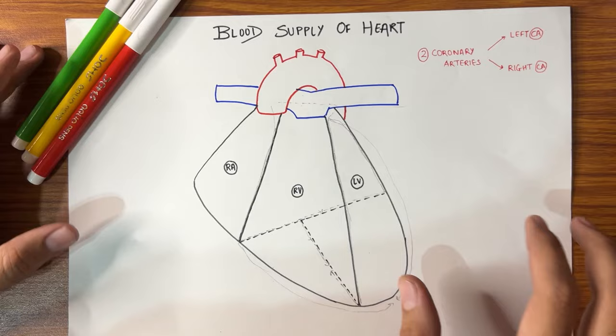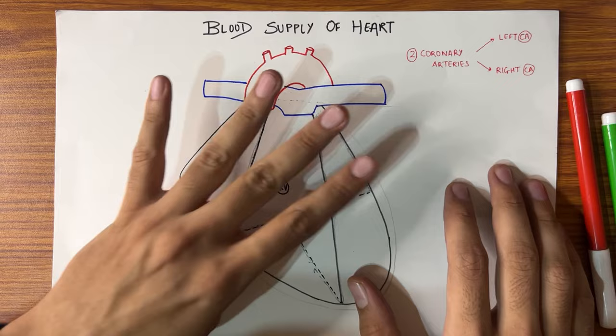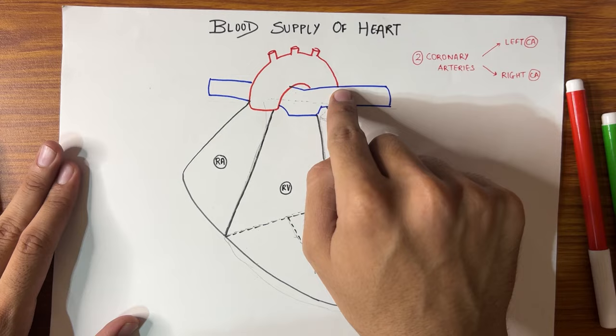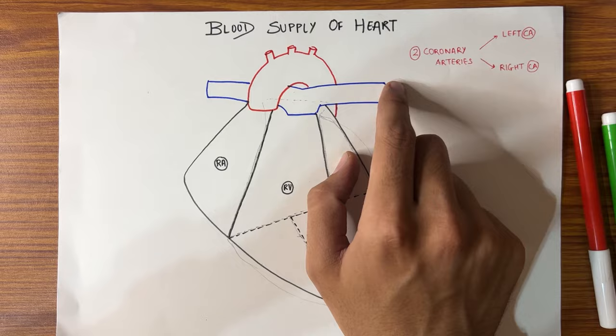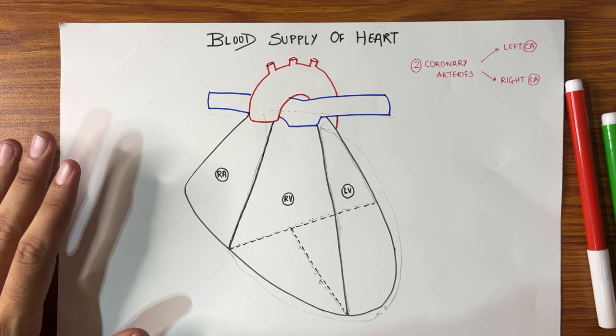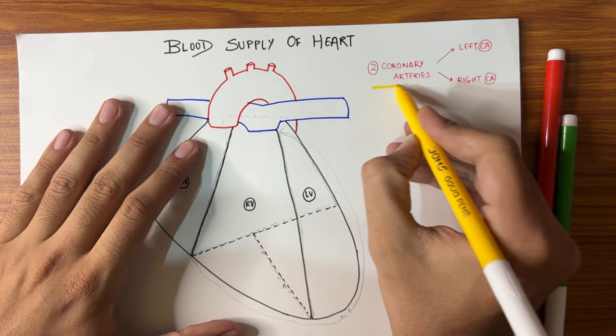Let's start with blood supply of the heart. We know that our heart has 4 chambers: 2 atria and 2 ventricles. The structure shown in red is the aorta and the one shown in blue is our pulmonary trunk, also called pulmonary artery. We will start the discussion of coronary arteries. We know that we have 2 coronary arteries — one left coronary artery and one right coronary artery.